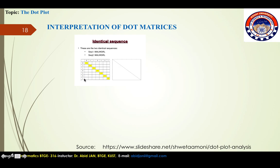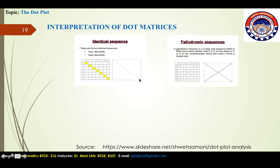Within a dot plot, two identical sequences are characterized by a single unbroken diagonal line. This is the main diagonal, and this is a reverse diagonal. A reverse diagonal crossing the main diagonal indicates palindromic sequences.